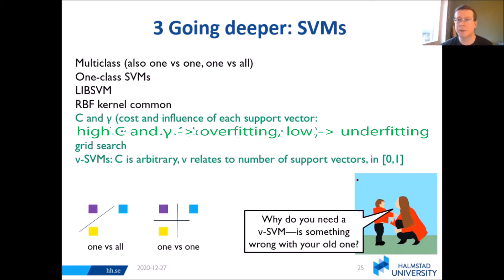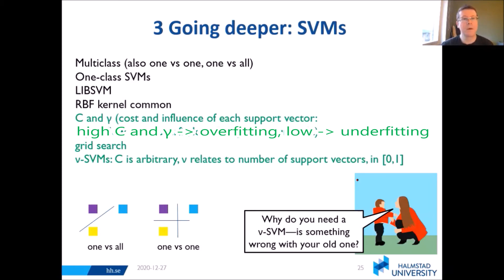LibSVM is a very nice implementation of SVMs. For anomaly detection, you have one-class SVMs which you can use. LibSVM recommends that if you don't know what type of SVM to use, you can use an RBF kernel C-SVM, which can deal with non-linear problems. If you do that, you have two parameters: C and gamma, which describe the cost of errors and influence of the support vectors respectively.